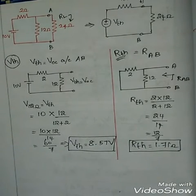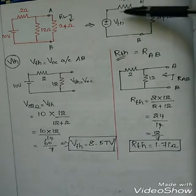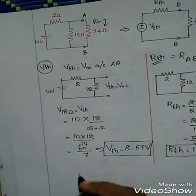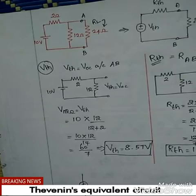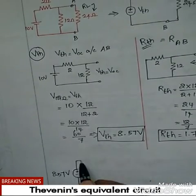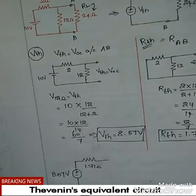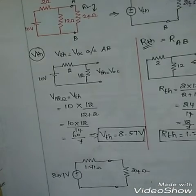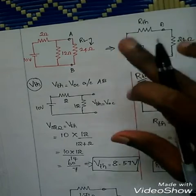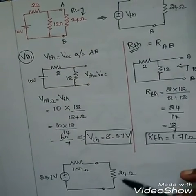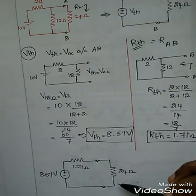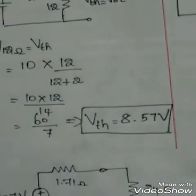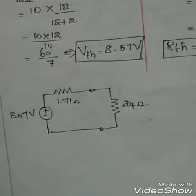We have found VTH and RTH, so now we redraw the circuit as its Thevenin's equivalent. VTH = 8.57 volts in series with RTH = 1.71 ohms. Finally, include the load resistance of 24 ohms across the terminals A and B. Don't forget to include the load resistance in the final diagram. Now we need to find the voltage across and current through this 24 ohm resistor.